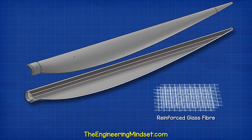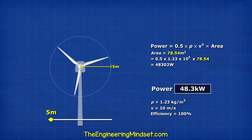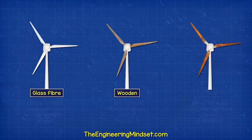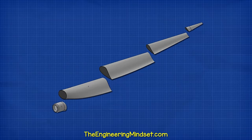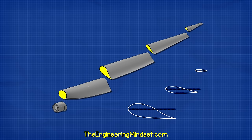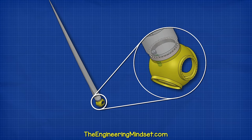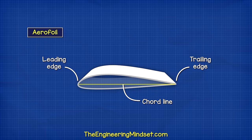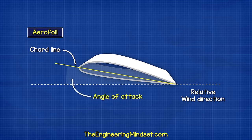The blades are typically made from reinforced glass fiber, which makes them very strong and very lightweight, allowing them to be longer so we can capture more wind energy. Metal or wooden blades are expensive, heavy, and more likely to fail. Heavy blades are hard to turn and harder to stop. The blades have an aerofoil shape that changes along the length of the blade and often twists to improve aerodynamic efficiency. The front of the aerofoil is the leading edge and the rear is the trailing edge. The line between these two points is the chord line. When the blade tilts, the difference between the chord line and the relative wind direction is known as the angle of attack.